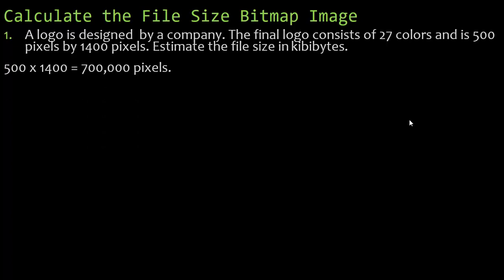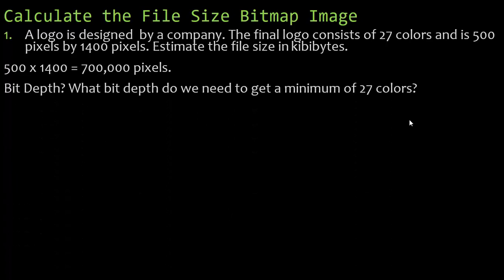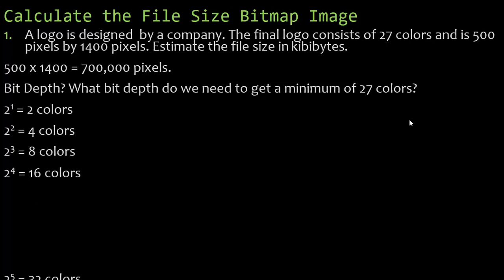For the image resolution we have 500 pixels by 1,400 pixels, giving us 700,000 pixels. Now, what bit depth do we need to get a minimum of 27 colors? If I try a bit depth of one, that gives me two colors — black and white. A bit depth of two gives me four, three gives me eight, four gives me 16, and five gives me 32 colors. None of these say 27 exactly, but can I get 27 colors with only 16 available? No. Can I get 27 colors if 32 are available? Yes. So even with a bit depth of five there are 32 colors available, and this company only used 27 — so the bit depth is five.